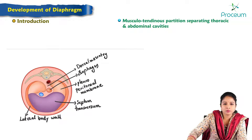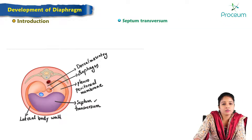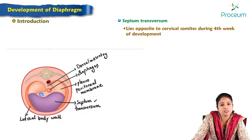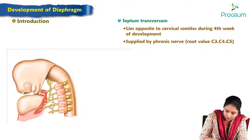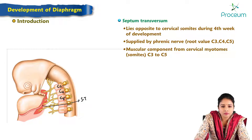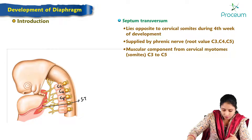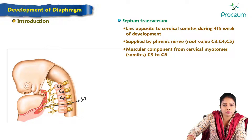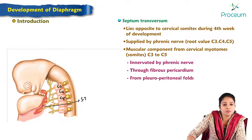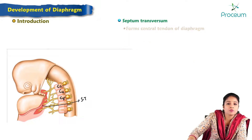Regarding the septum transversum: it develops opposite to the cervical somites C3, C4, and C5 during the fourth week of development, which is why it is supplied by the phrenic nerve. The muscular component of the cervical myotomes C3 to C5 forms the muscular component of the septum transversum, and this explains why the diaphragm is innervated by the phrenic nerve through the fibrous pericardium from the pleuroperitoneal folds. Septum transversum forms the central tendon of the diaphragm.